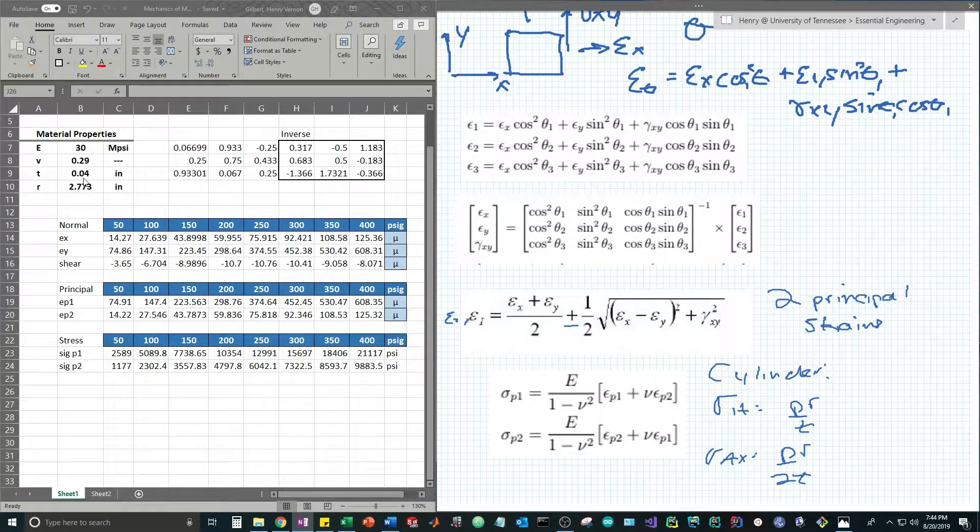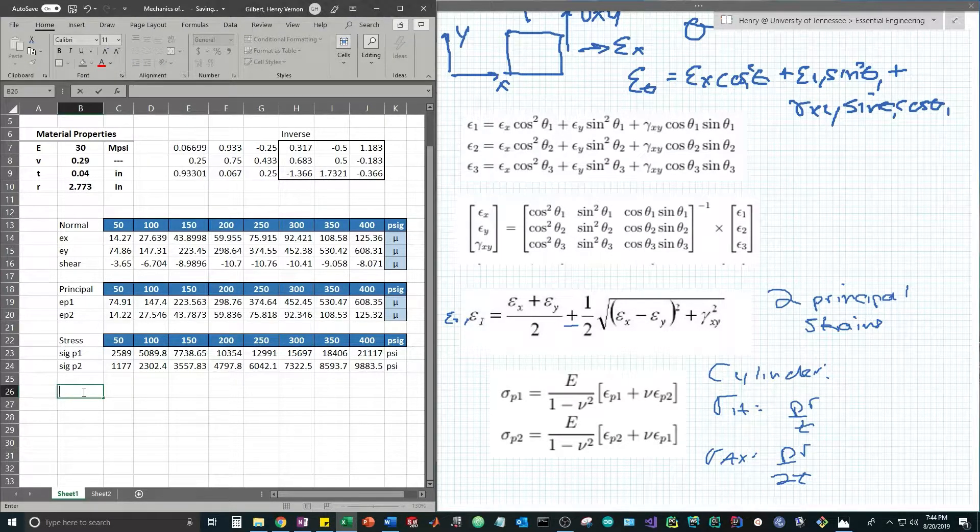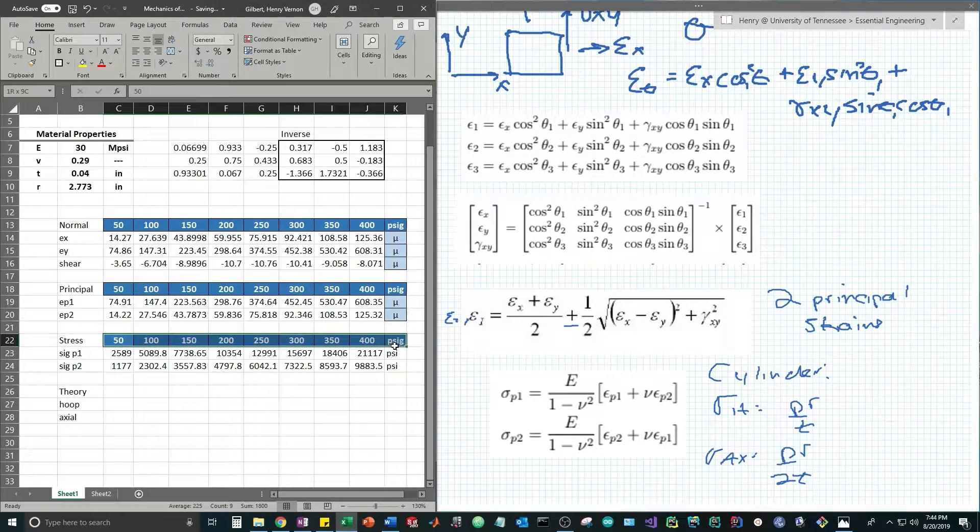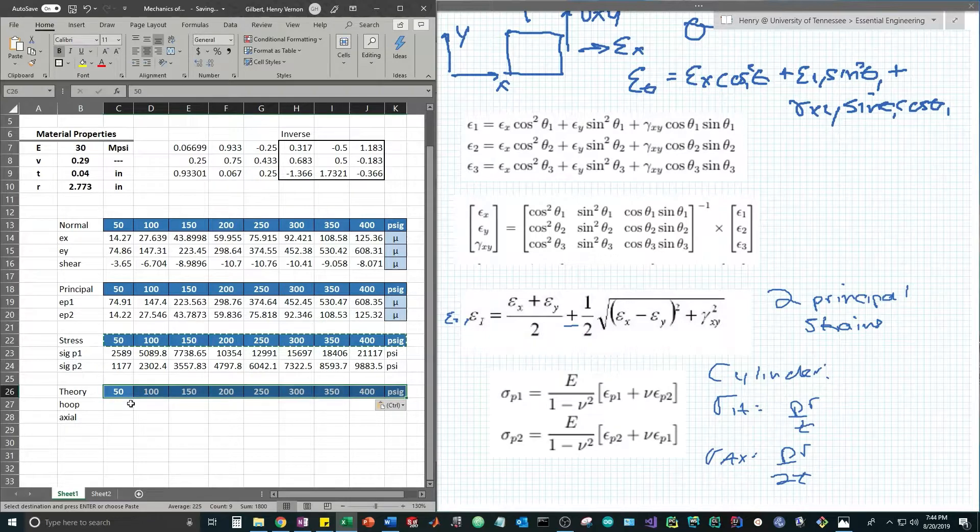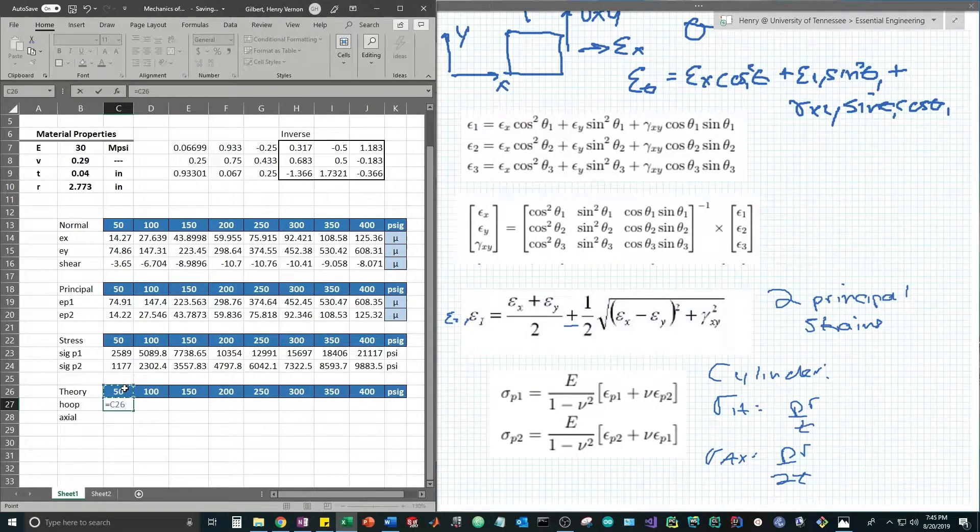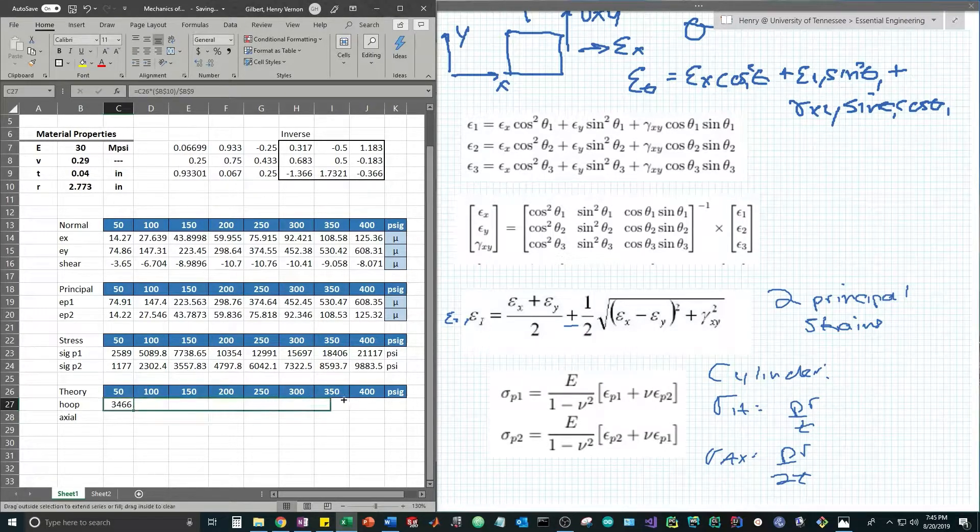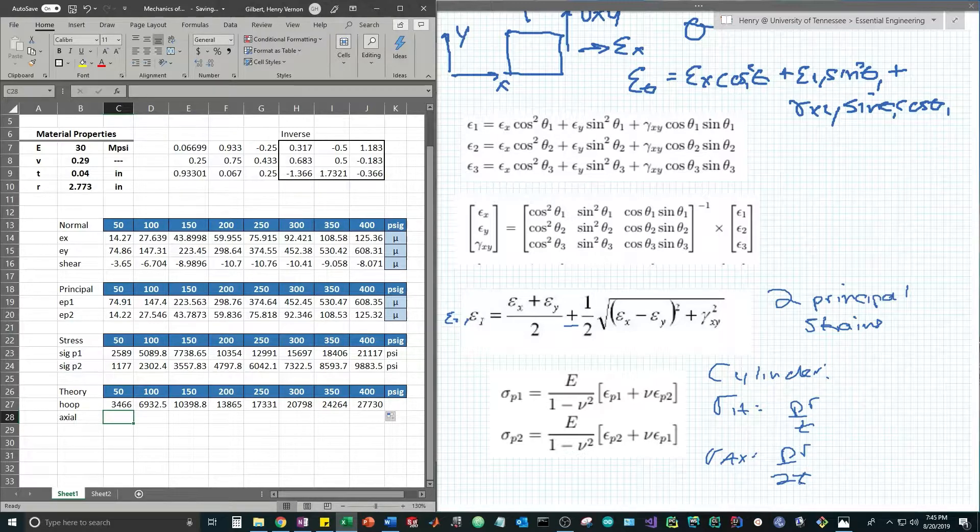We're given the radius and the thickness here, so let's calculate the theoretical values based on the material properties. We know that hoop stress and axial stress will be the two principal stresses in this configuration. The hoop stress is simply P times radius divided by thickness. We're going to make these absolute and drag that across. Axial stress is PR over 2T, or we could simply say it's one half of hoop stress.